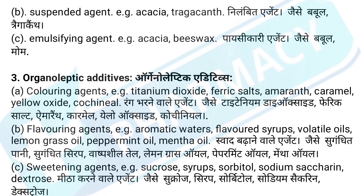B. Suspending agents, e.g. acacia, tragacanth. Nilambit agent, jaysay babool, tragacanth. C. Emulsifying agents, e.g. acacia, beeswax. Paisikari agent, jaysay babool, mom.